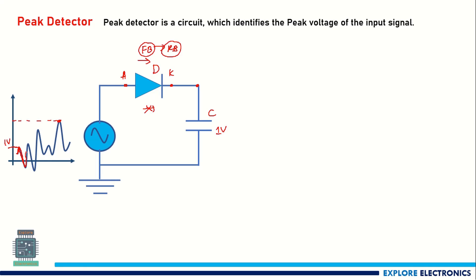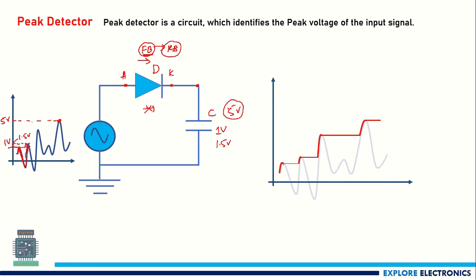As the voltage increases again above 1 volt, the diode becomes forward biased again and the capacitor charges to the next peak value — say 1.5 volts. This process continues as the signal varies over time. Once it reaches the maximum peak, say 5 volts, the capacitor value will be 5 volts. This is how the peak detector detects peaks and finally outputs the maximum peak voltage.